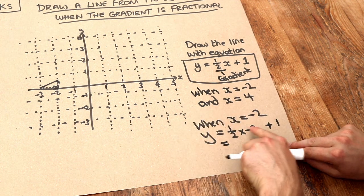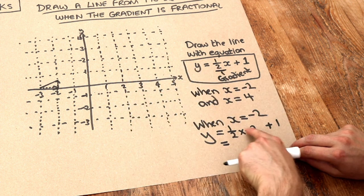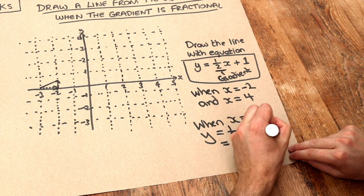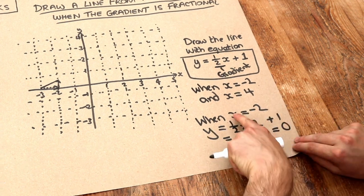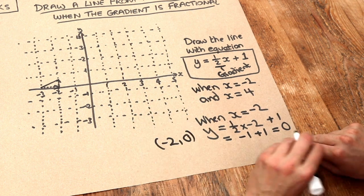Half times minus 2, well what's half of 2? Half of 2 is 1, but it's positive times negative, so it's negative 1 plus 1, and that equals 0. So when x is minus 2, y is 0, so that's a coordinate, minus 2, 0.